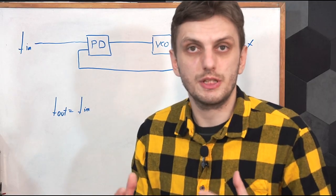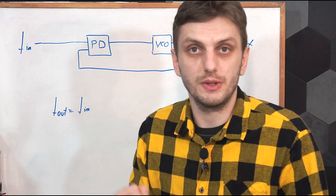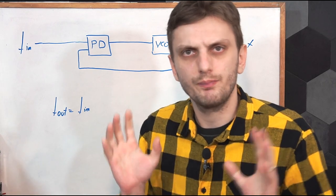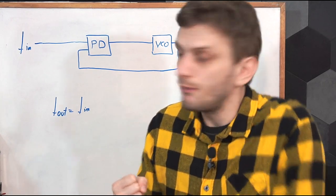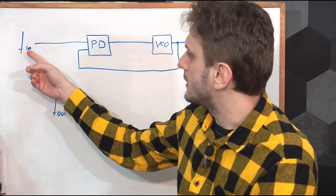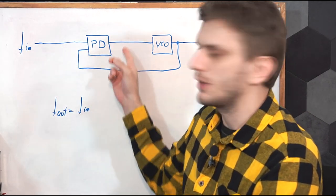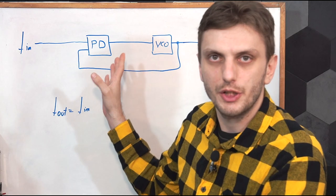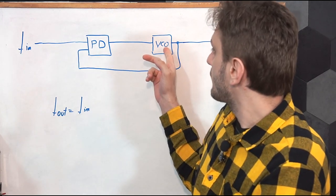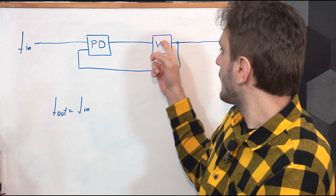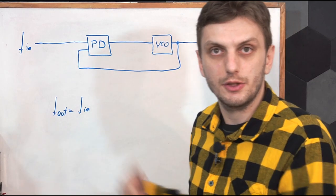To understand how a PLL can be used to multiply the frequency of a signal, let's quickly remember how the PLL is built. We have a signal at a certain frequency going into a phase detector, there's a low pass filter, then it goes into a voltage controlled oscillator, and then the loop is closed back through the phase detector.